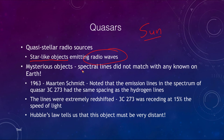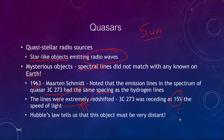Another issue was that the spectral lines did not match any known here on Earth — what were these things made of? In 1963, Martin Schmidt noted that the emission lines in the spectrum of quasar 3C273 had the same spacing as the hydrogen lines, but they were extremely redshifted — enough to show that the object was receding at 15% the speed of light. Using Hubble's law, which relates velocity to Hubble's constant times distance, this meant the object must be extremely far away.